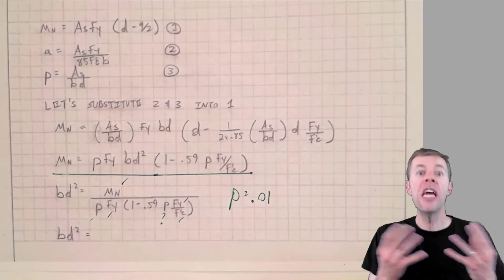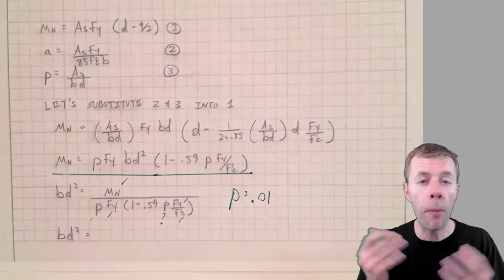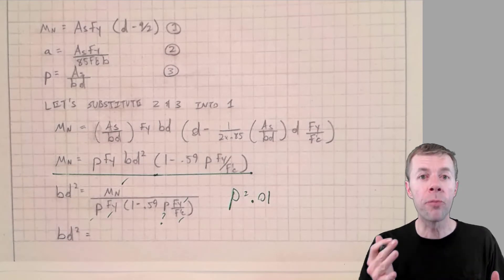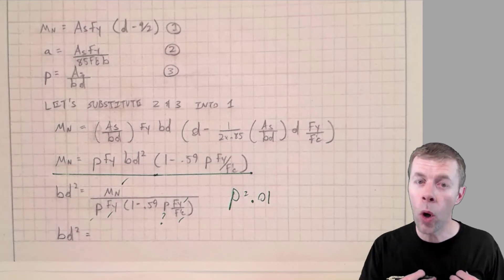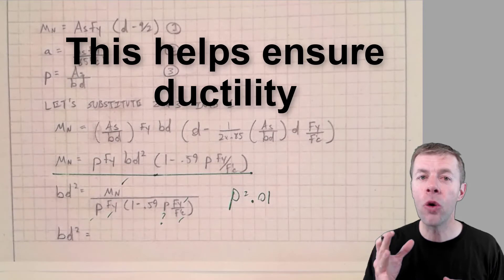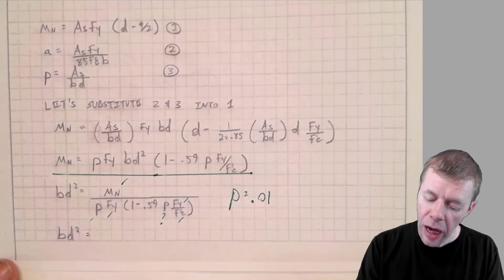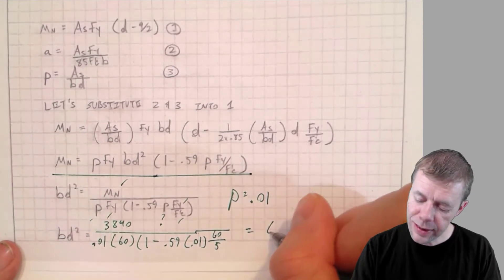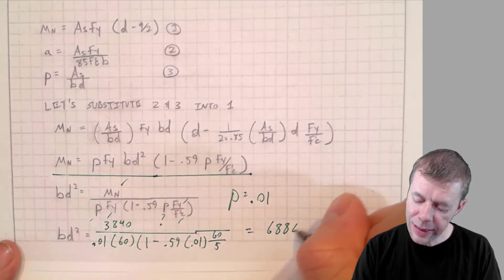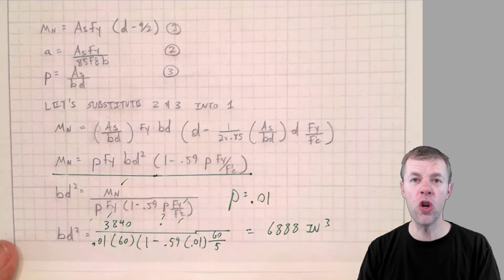That doesn't mean it's the way you have to do it. If you wanted to, you could choose and work this problem again multiple ways using multiple rhos. But I like a rho of 0.01. It keeps me away from the danger zone. When I start to plug into my equation now, I get 6888 inches cubed.